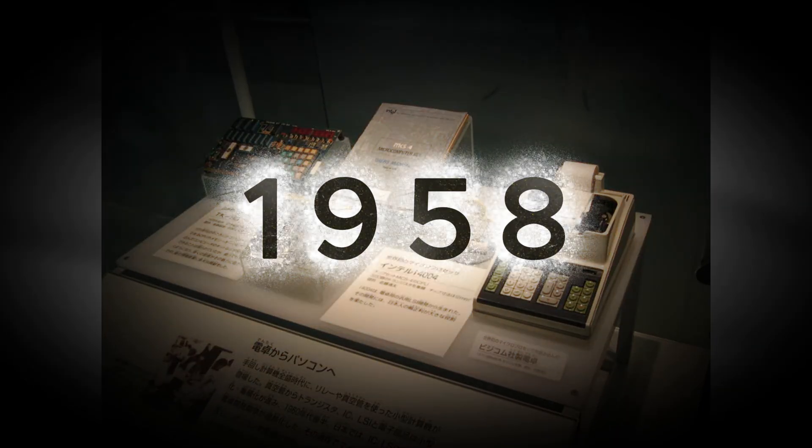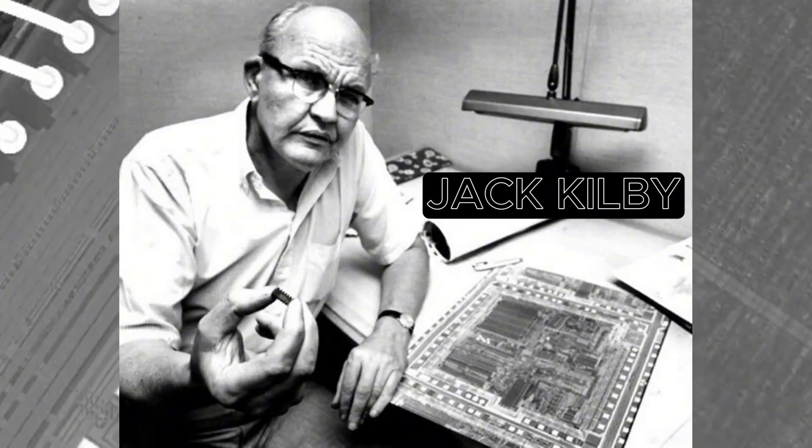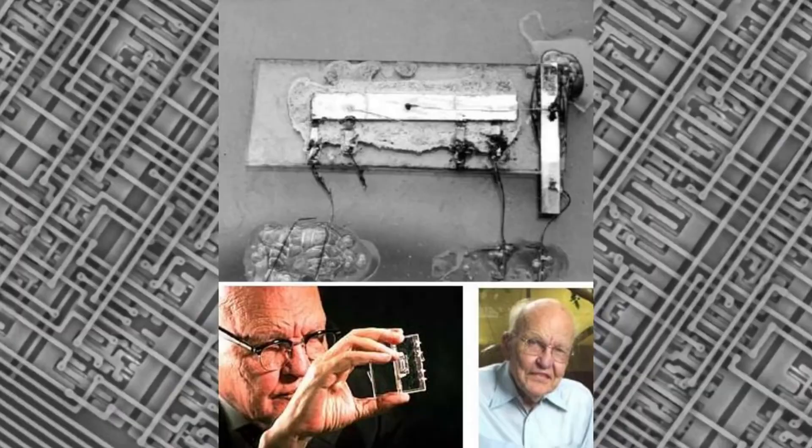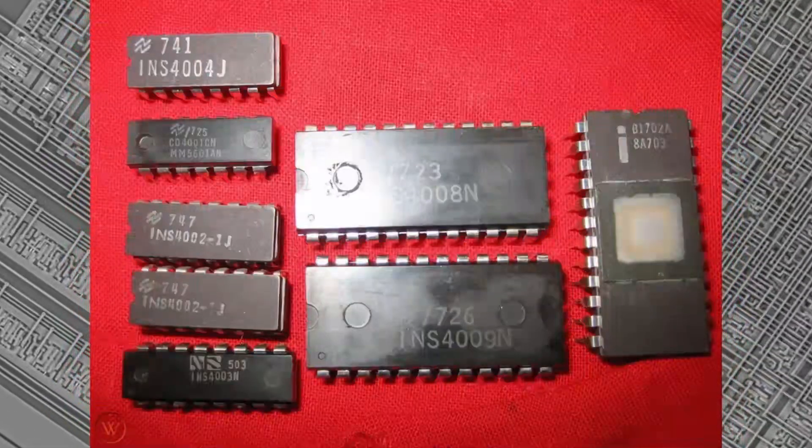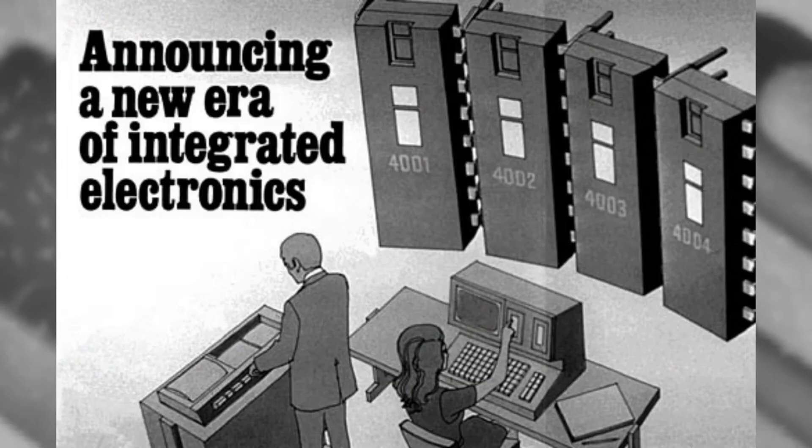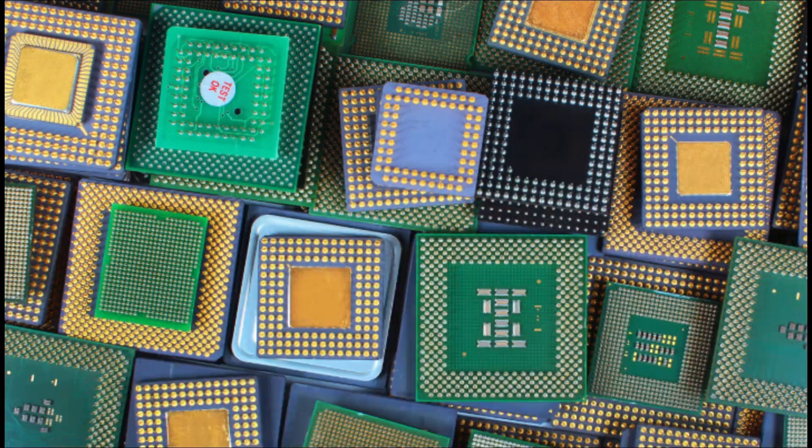In 1958, Jack Kilby, an engineer at Texas Instruments, created the first working integrated circuit using germanium. A year later, Robert Noyce, co-founder of Intel, improved the design using silicon, a more efficient and abundant material. That was the real starting point for the microchip revolution.